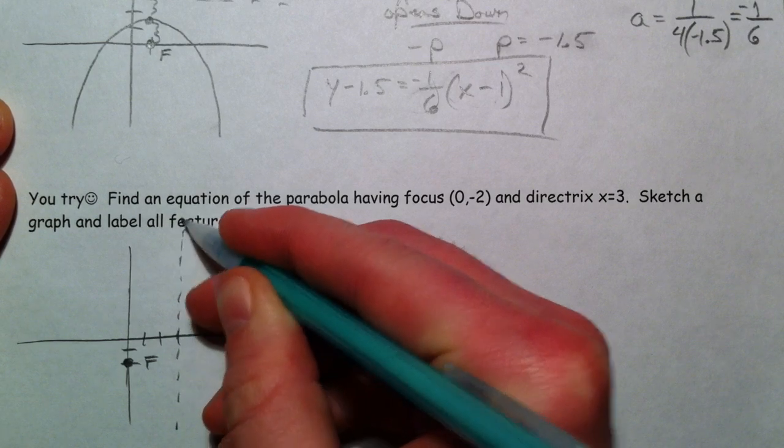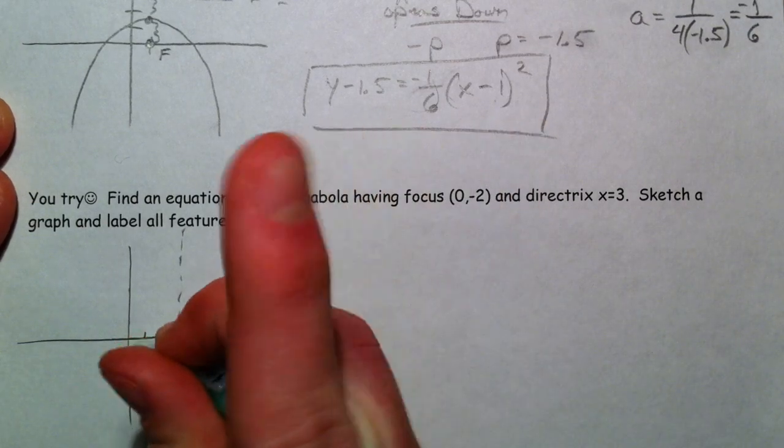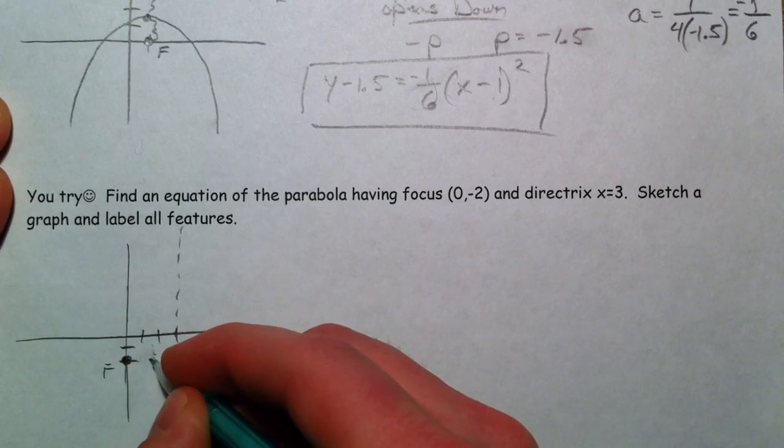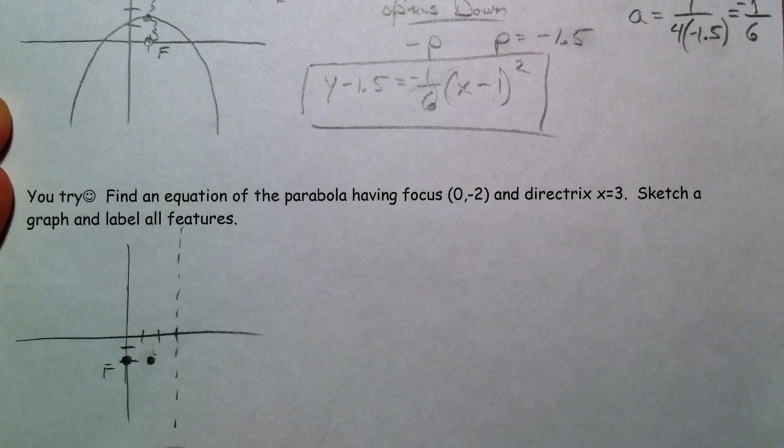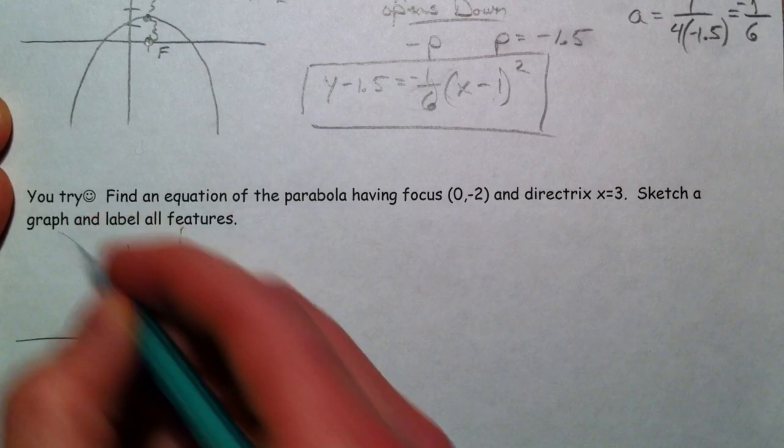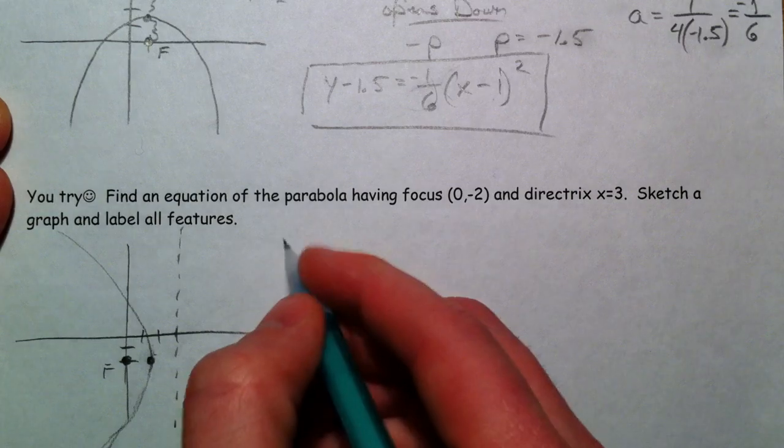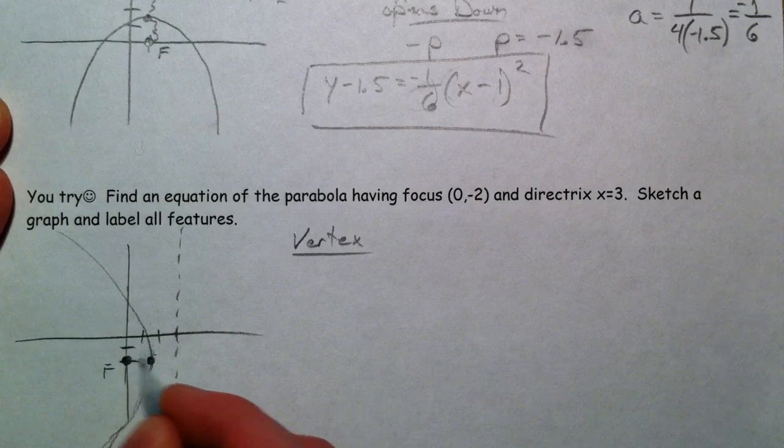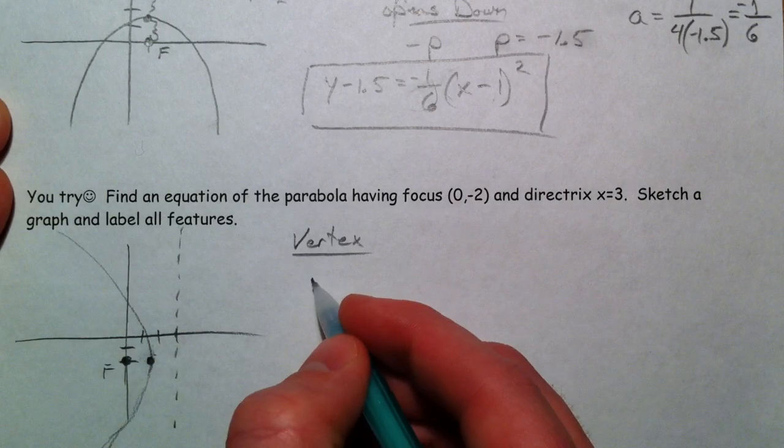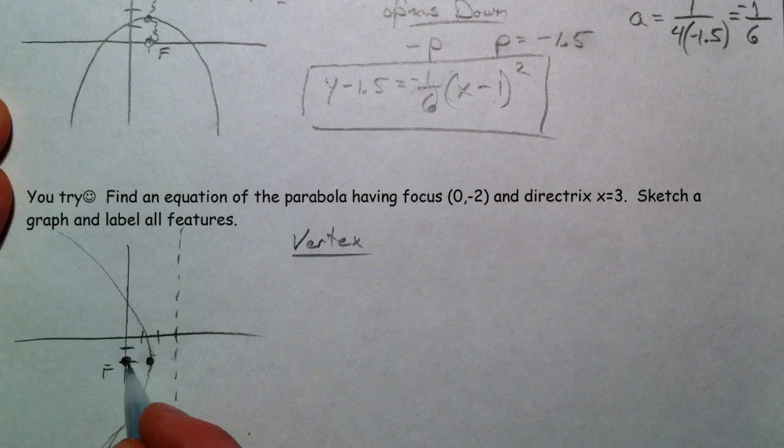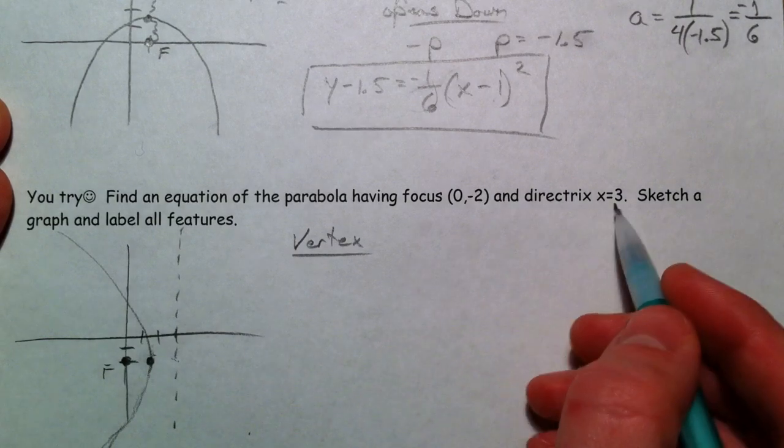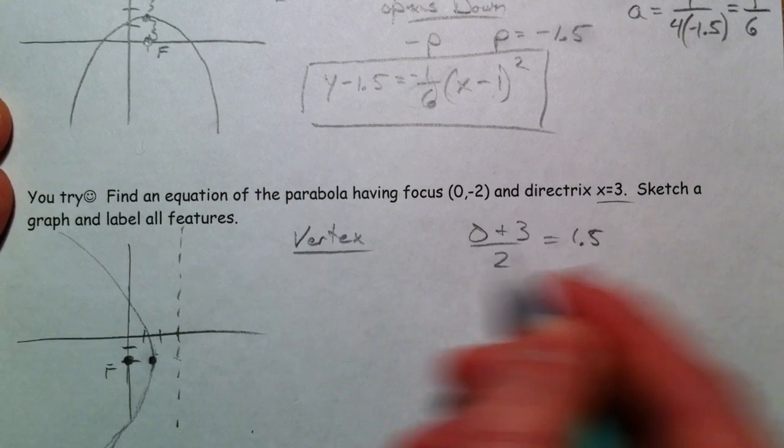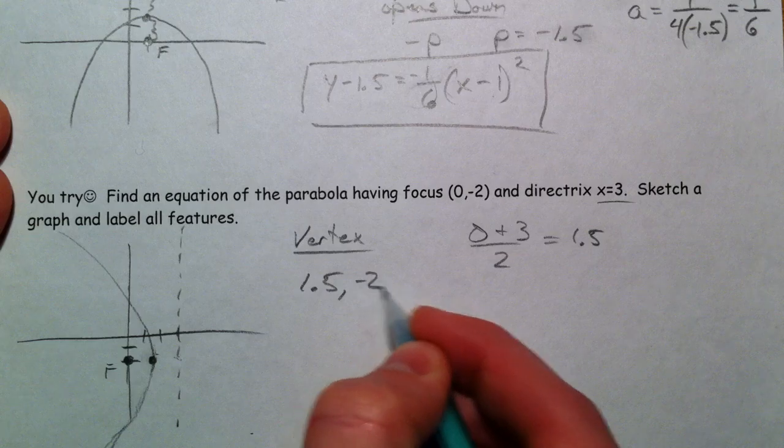So this is very, very similar. I'm going to flip this around. This is our focus. And so our vertex has to be right in the middle of our focus and our directrix. And so the vertex is—well, we went between 0 and 3 again. Notice that we used the x's this time, between 0 and 3, because that had to deal with it. 0 plus 3 divided by 2, 1.5. So the vertex is (1.5, -2).